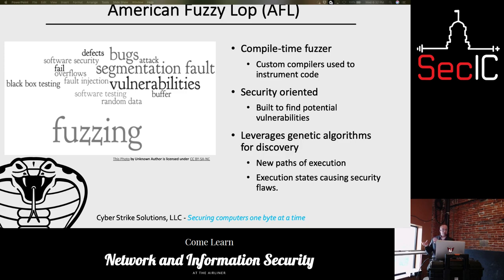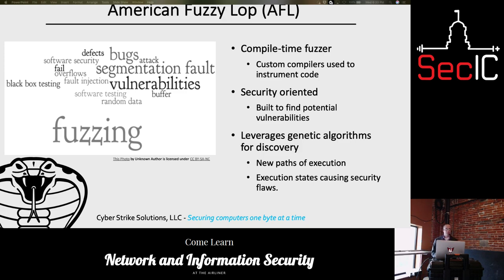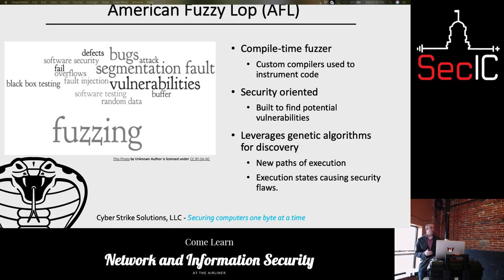American Fuzzy Lop has custom compilers — one for GCC and one for Clang. You take your source code and compile it with these AFL compilers, which instruments the binaries. After instrumentation, you run AFL against it to find weaknesses. It's security-oriented, built by Google to find vulnerabilities, and it leverages genetic algorithms. When running, it looks for new paths of execution, continuing until it has exhausted its ability to find new paths, identifying execution states that cause security flaws.